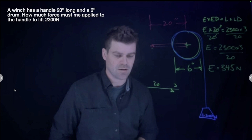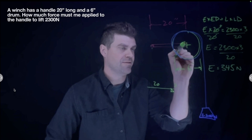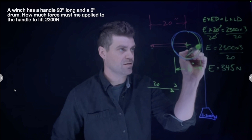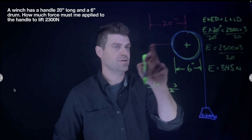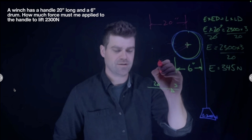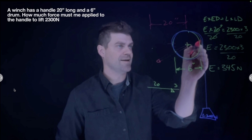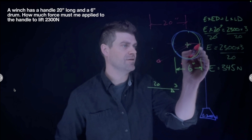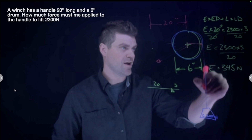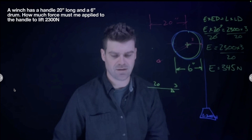All you have to do is find the fulcrum, find the distance from the fulcrum to where you're applying effort, and find the distance from the fulcrum where the load is applied. If the handle changes position as you crank, the effort distance changes — but the cable wraps around the drum at a tangential point, so that load distance is always 3 inches on that side.